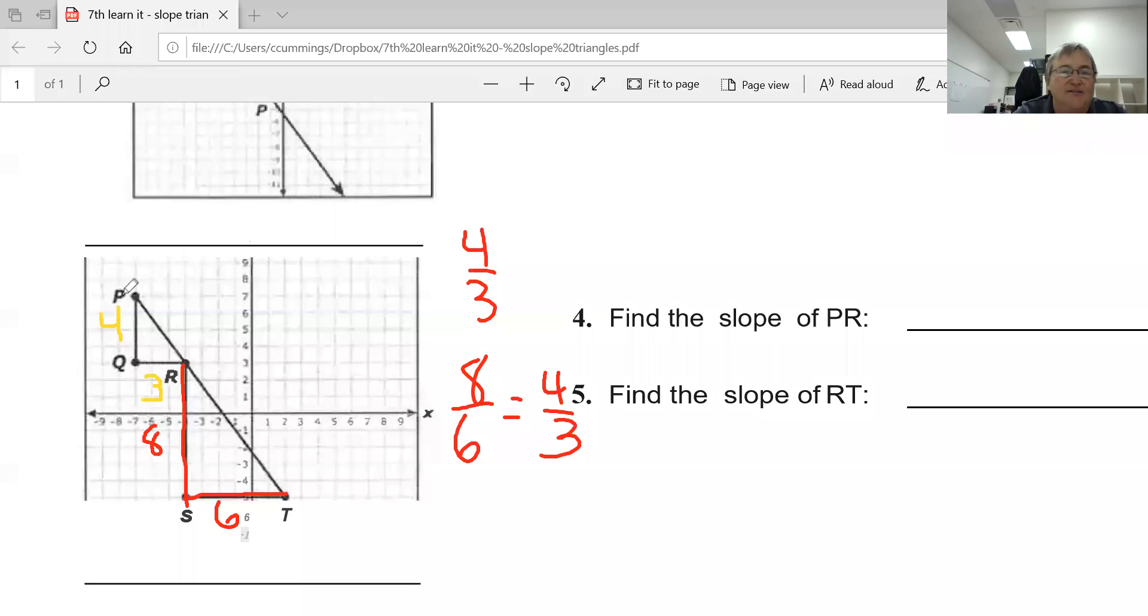...of the line right here is 4 thirds—negative 4 thirds. Make sure we put our negative sign, make sure we have negative 4 thirds, and negative because we fell. Let's do some more.